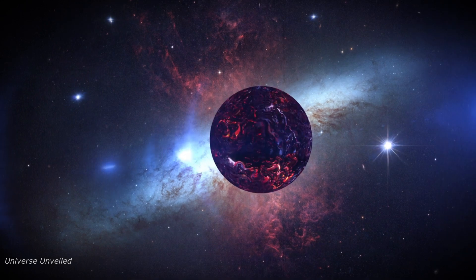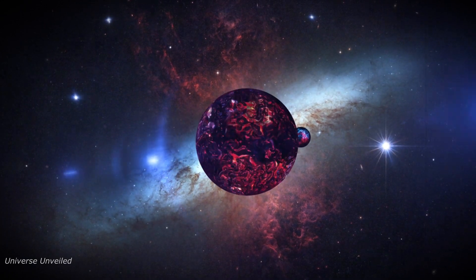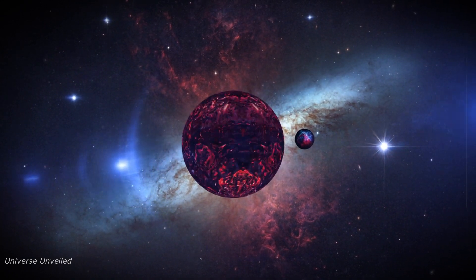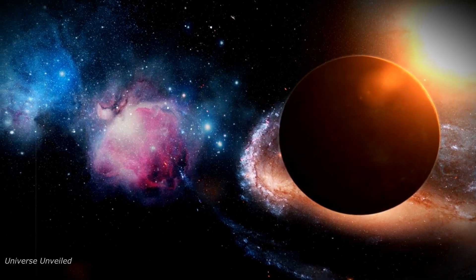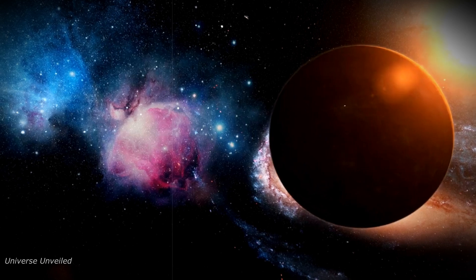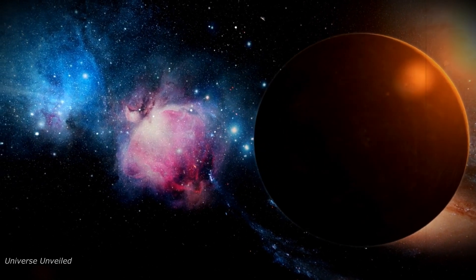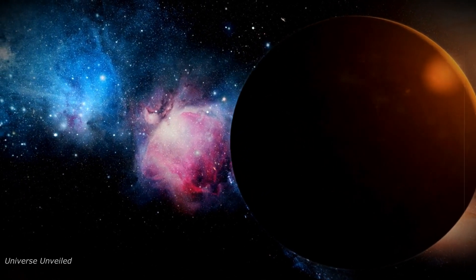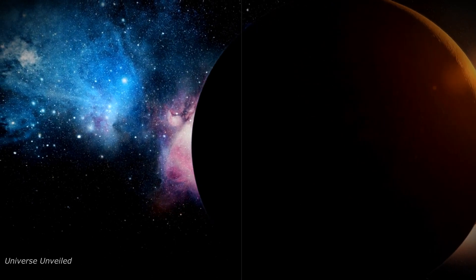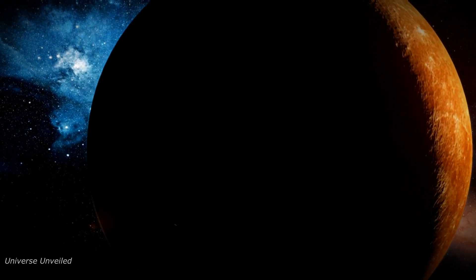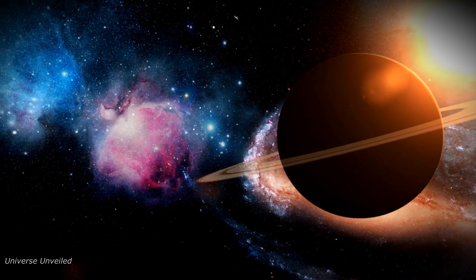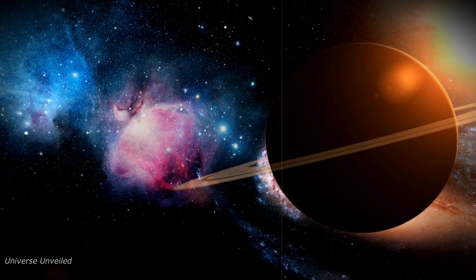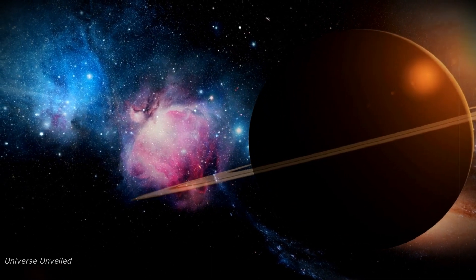Discovering this impossible planet was no easy feat. It wasn't like looking through a telescope and spotting something unusual. It took years of observation, meticulous data analysis, and a healthy dose of scientific curiosity. Astronomers were studying a seemingly ordinary star when they noticed something strange: the star was wobbling ever so slightly, as if being tugged by an unseen companion. This gravitational dance suggested the presence of an orbiting planet.